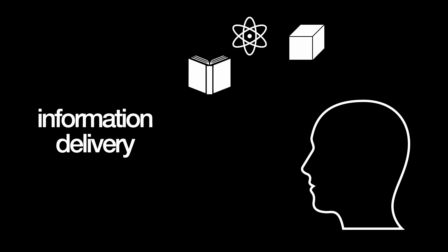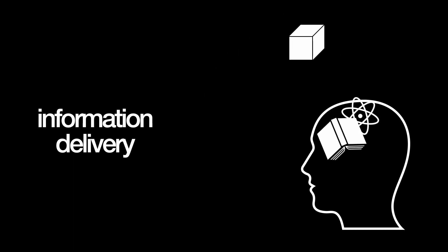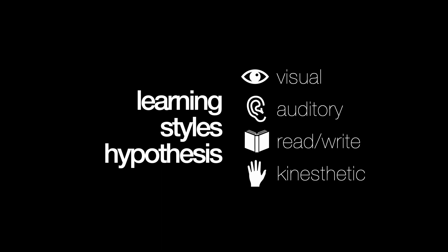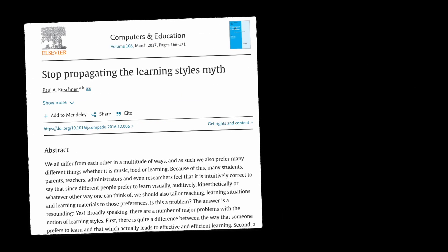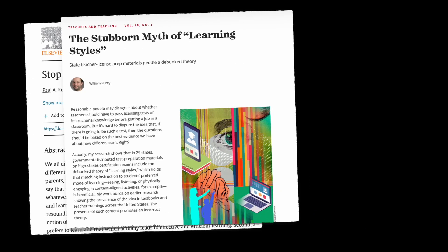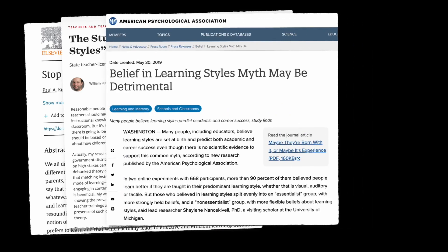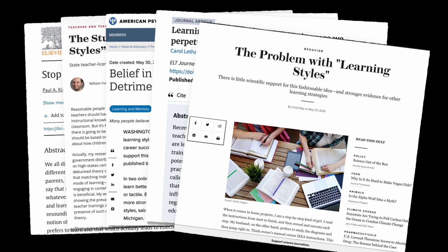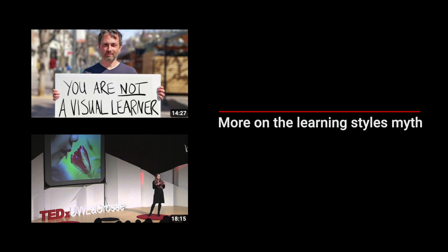Basically, the information delivery view sees learners as passive individuals waiting for information to be poured into their heads. Consistent with this view is the learning styles hypothesis, which states that everyone has their own learning style and teachers should cater to those styles. Research has shown that there is no evidence supporting the existence of learning styles or that students benefit when teachers present material according to their learning style.